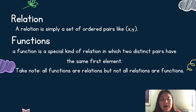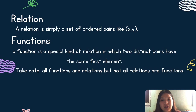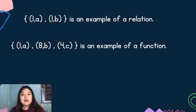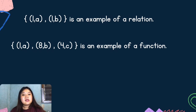Let me show one example para mas maging clear. (1,A), (1,B) is an example of a relation. (1,A), (8,B), and (4,C) is an example of a function. Basically, makikita natin sa example ng relation na it is an ordered pair, and sa example ng function na pairs din siya but x corresponds to only one value of y.